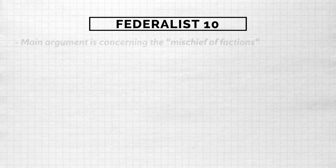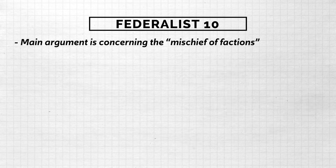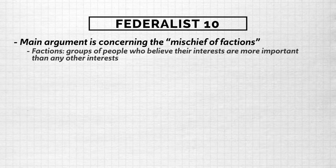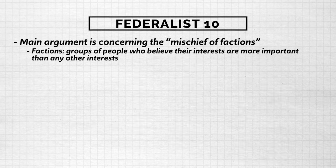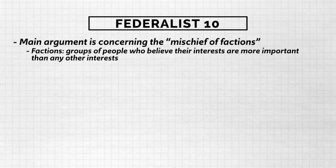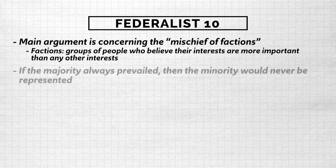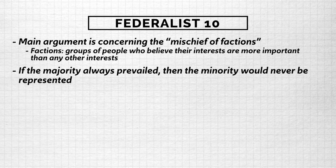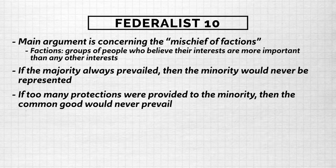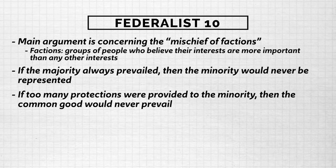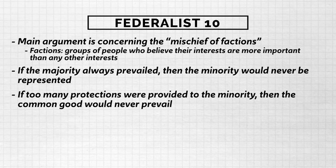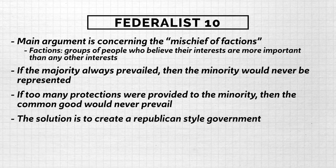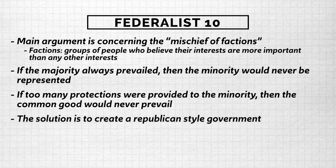Let's start with Federalist 10. The main argument in this document concerns the 'mischief of factions.' Factions are just groups of people who believe that their interests are more important than any other interests. The problem is this: if the majority always prevailed, then the minority would never be represented. However, if too many protections were provided to the minority, then the common good would never prevail. The solution in Federalist 10 is to create a Republican-style government, which is what the Constitution provided.